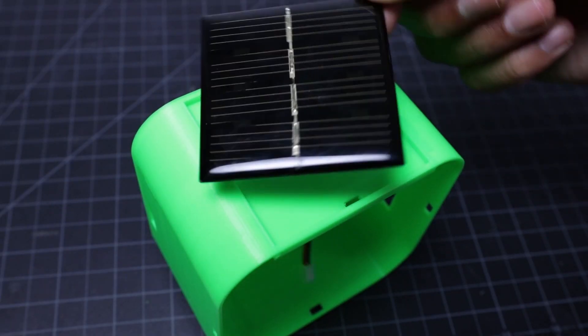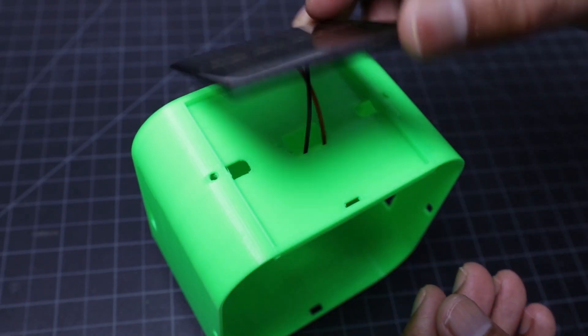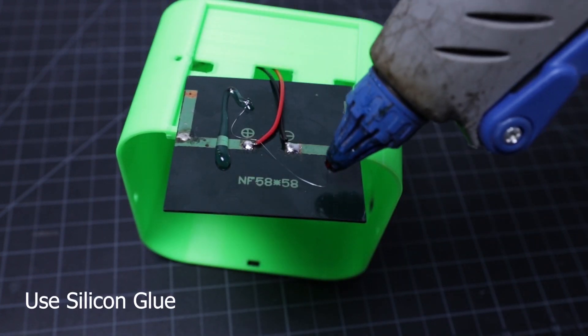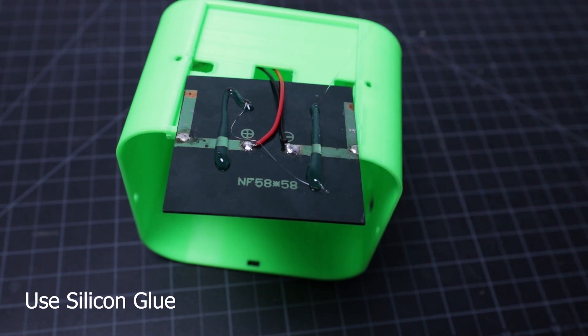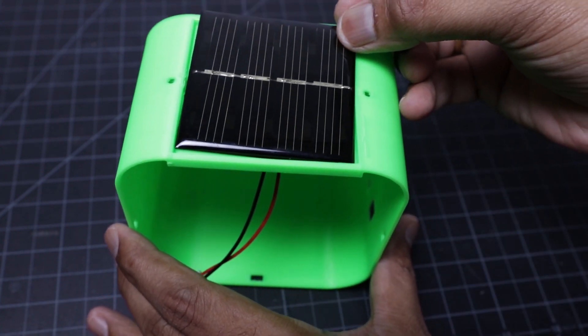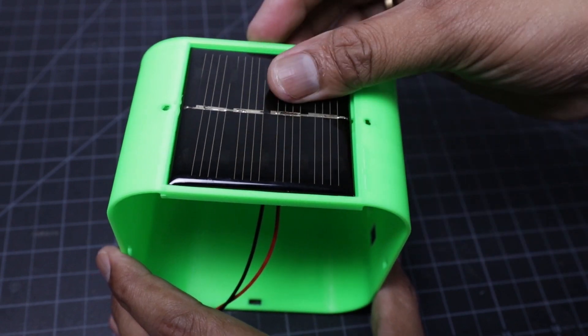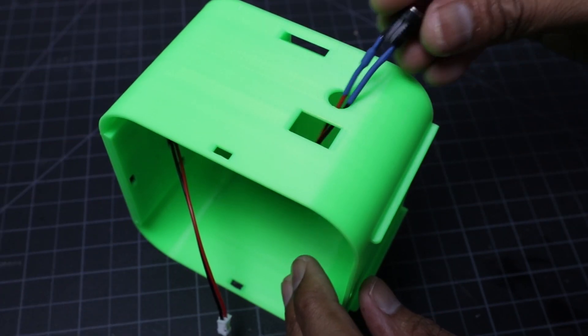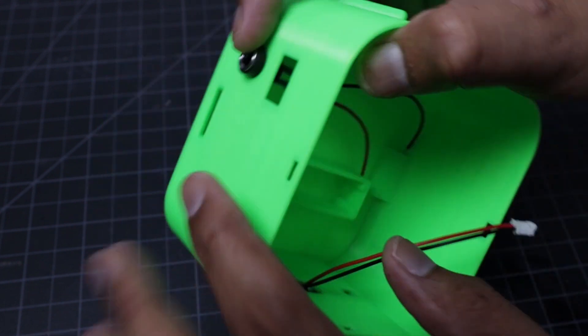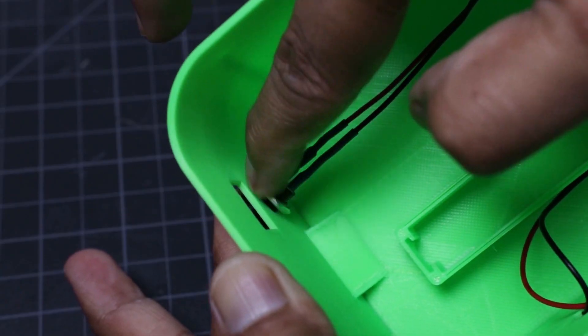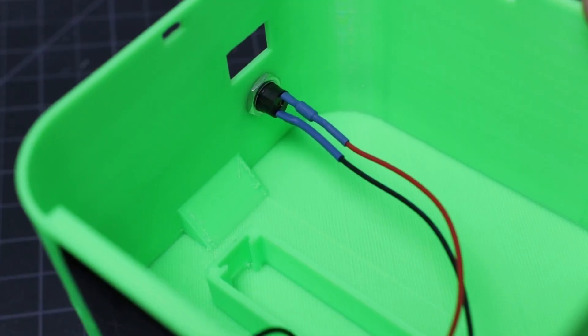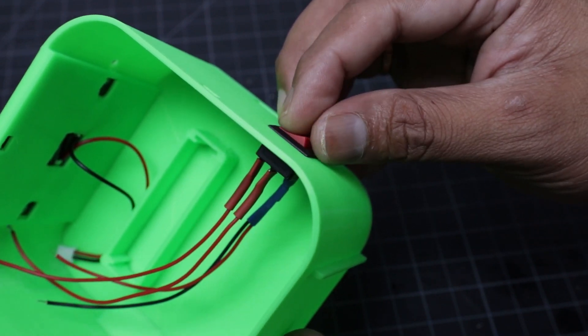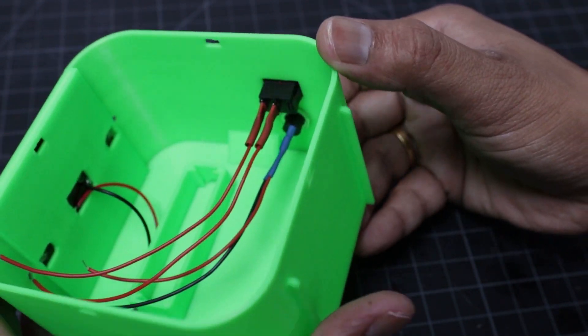Now you can install the components along with PCB by using hot glue.